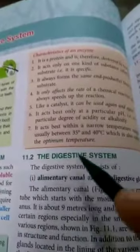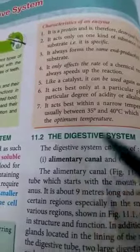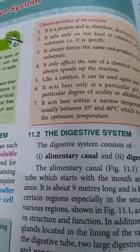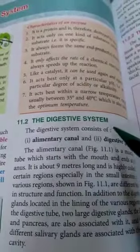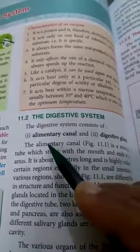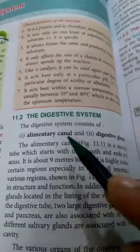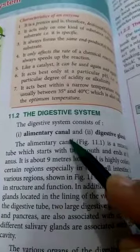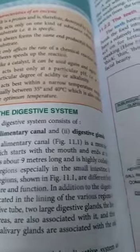Now in this chapter we will study about the digestive system. Our digestive system includes two important things: the alimentary canal and digestive glands.